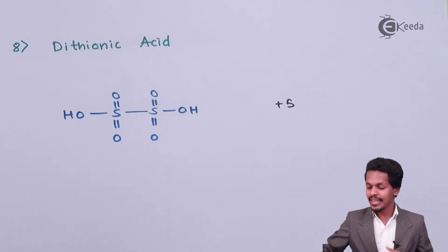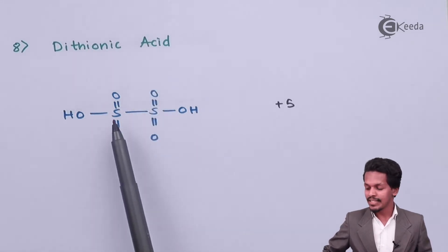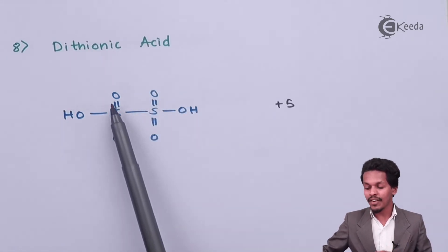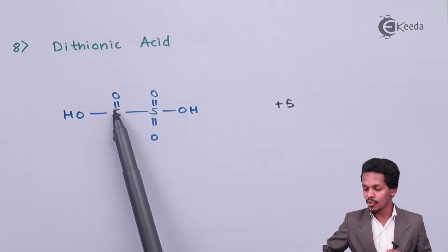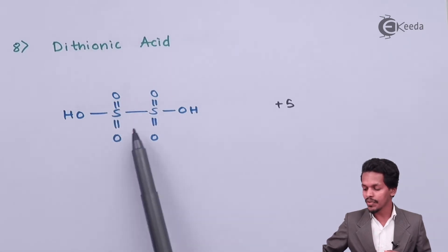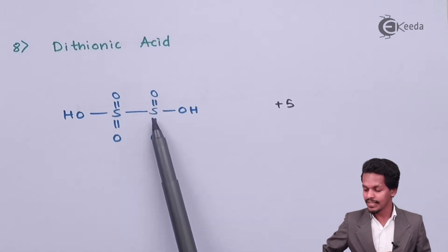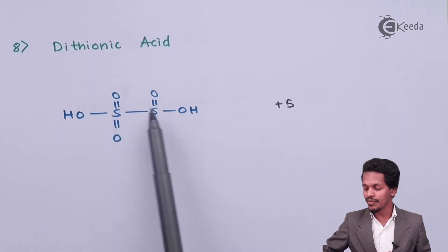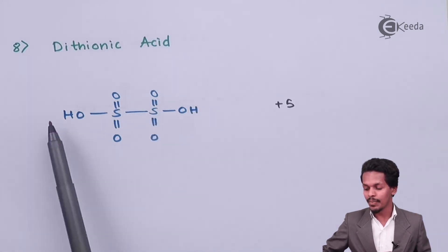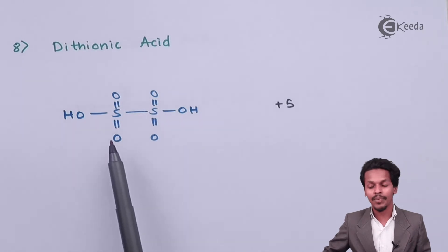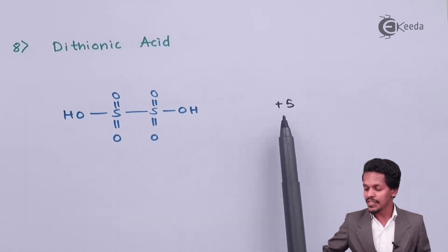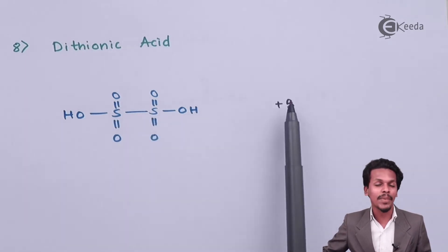The next is dithiolic acid. In this structure, there are four sulfur double-bonded oxygen groups — we can see S=O, S=O, S=O, and S=O — and the remaining two valences are satisfied by OH groups. The oxidation state of sulfur here is plus 5.